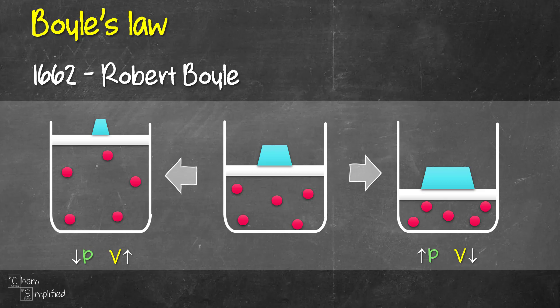It's important to note that throughout this experiment of increasing and decreasing the pressure, the amount of gas remains the same, and the same goes with the temperature. Both the moles of the gas and temperature remain constant. We're only changing the pressure and the volume in Boyle's law.